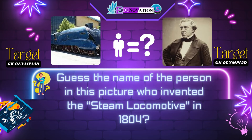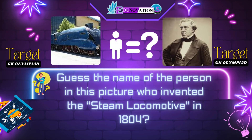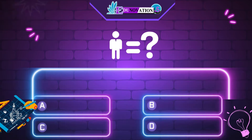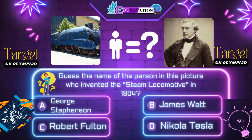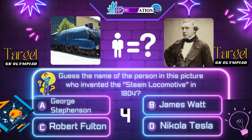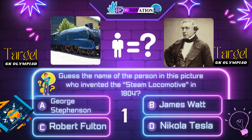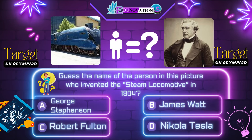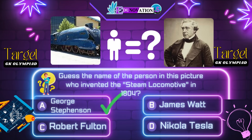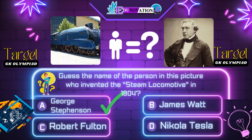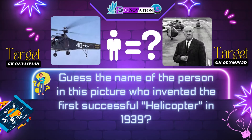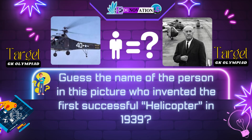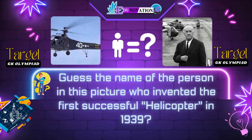Next question. Guess the name of the person in this picture who invented the steam locomotive in 1804. Your options are: A. George Stevenson, B. James Watt, C. Robert Fulton, D. Nikola Tesla. Time's up. Correct answer is A. George Stevenson.